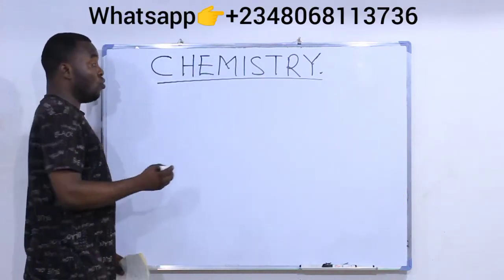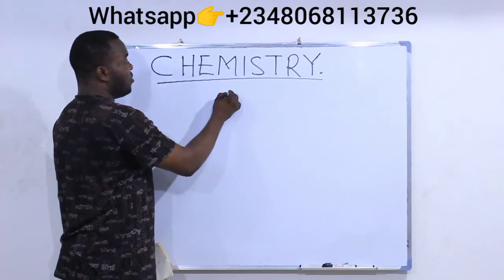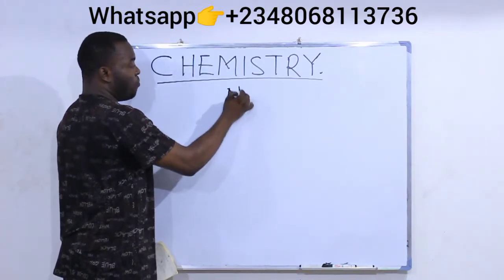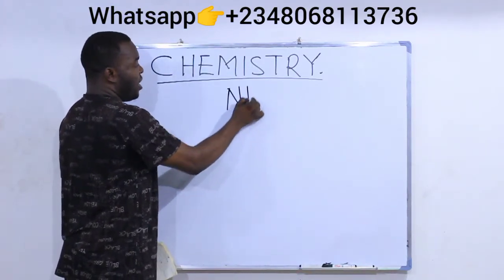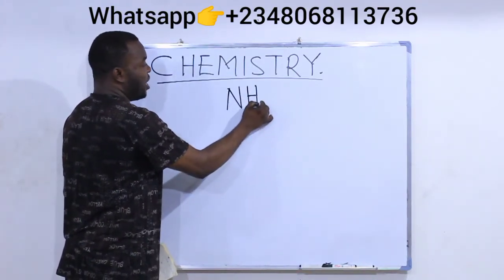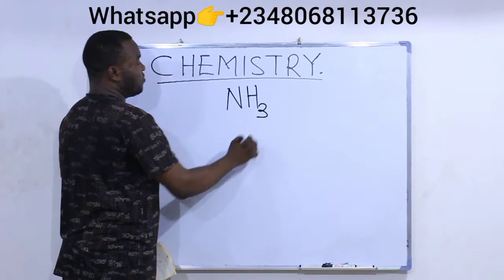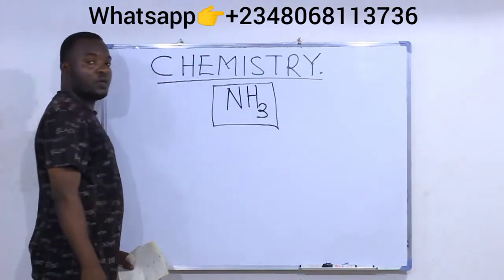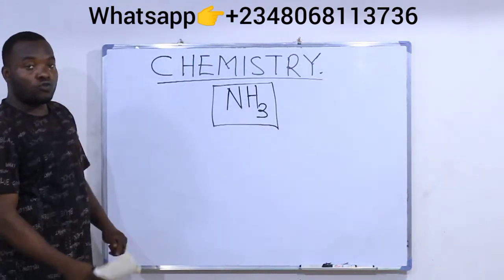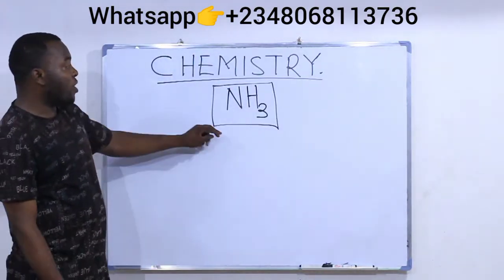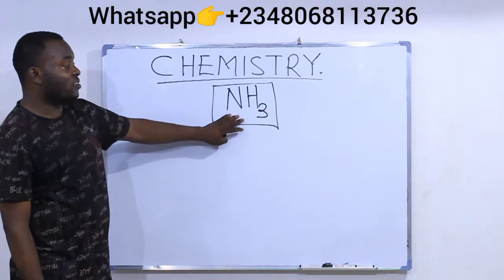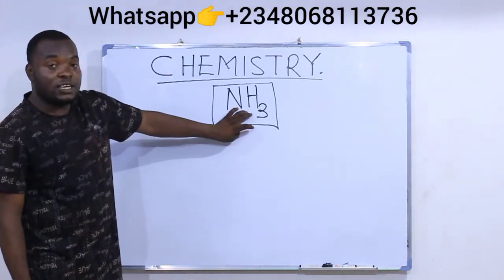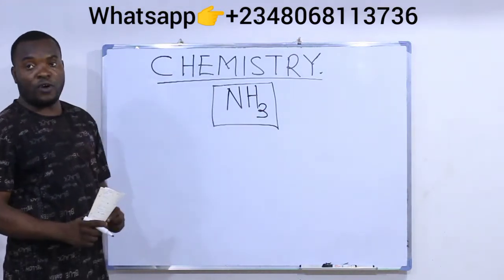Ammonia, as we know, contains one nitrogen atom and three hydrogen atoms. This is the ammonia molecule. We want to know the number of electrons that are being shared in this molecule of ammonia.